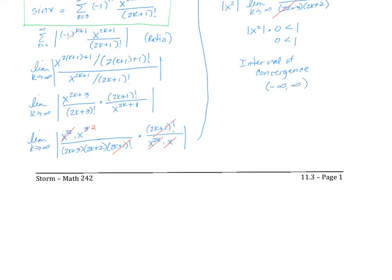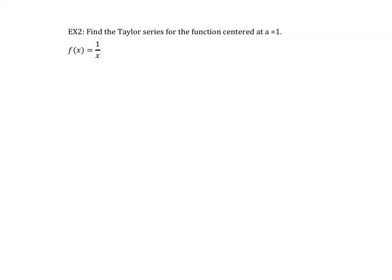The radius of convergence is infinity, so we don't have to check endpoints. We've found the Maclaurin series and the interval of convergence. Let's look at another example.